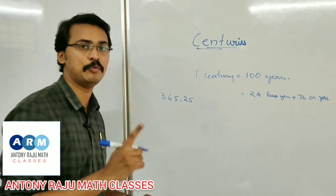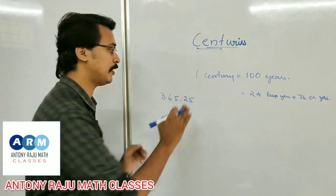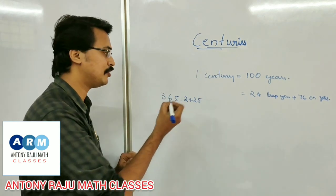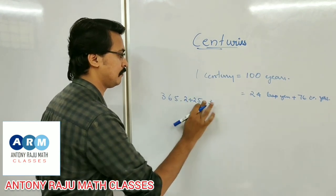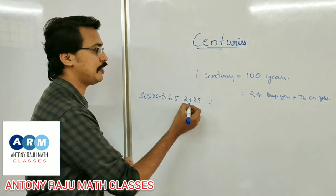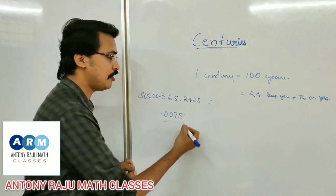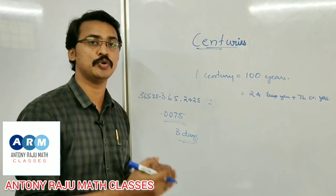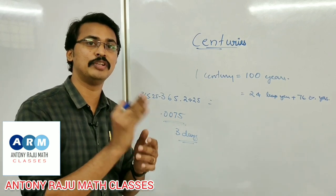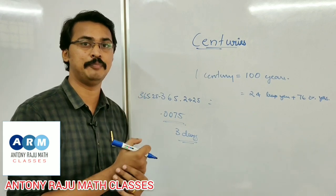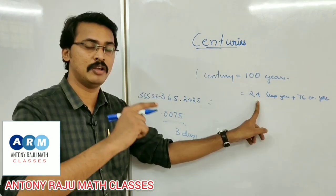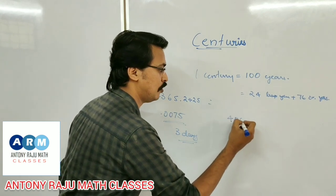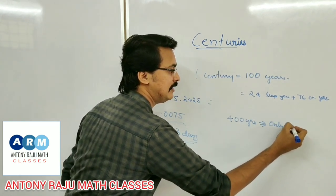365.25 is not exactly equal to 365.2425. We will find the difference: 365.25 minus 365.2425 is equal to 0.0075. So over 400 years, there are only 97 leap years — not 100.